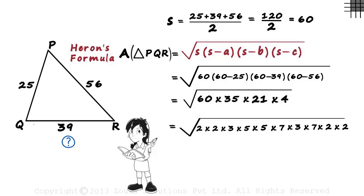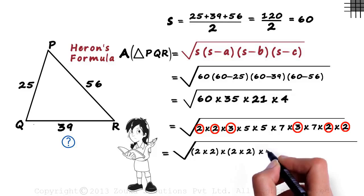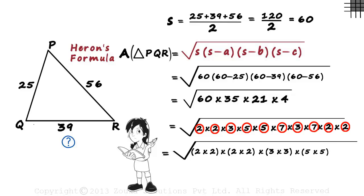The next step in the prime factorization method was to start making groups of two same numbers. There are four 2's. They can be written as 2 multiplied by 2 multiplied by 2 multiplied by 2. Apart from that, there are two 3's. We can write it as 3 times 3. Two 5's written as 5 times 5. And two 7's as 7 times 7.